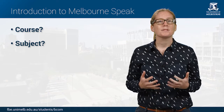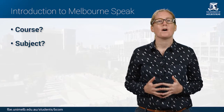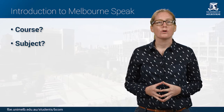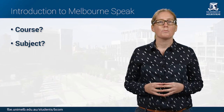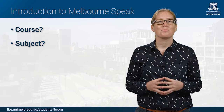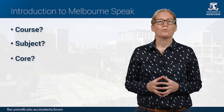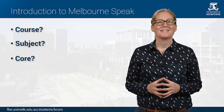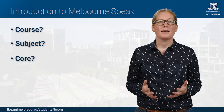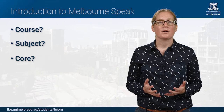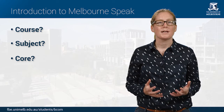A typical subject in the BCom is one semester long and is worth 12.5 credit points. In total you will complete 24 subjects in your BCom, completing 300 points, unless you have been granted advanced standing. You will study several compulsory subjects that everyone in the BCom must complete, such as introductory microeconomics and organizational behavior. These are core subjects.